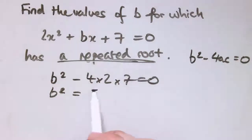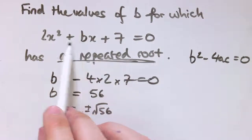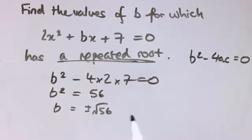So I've got b squared is 56, so b would be plus or minus the square root of 56. There are two values here that work to give a repeated root, plus the square root of 56 and minus the square root of 56. If you want to, you could write that as plus or minus 2 root 14, perhaps a bit more elegant.